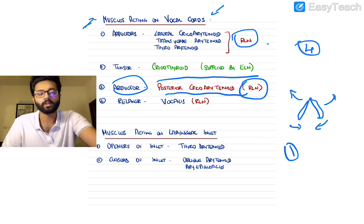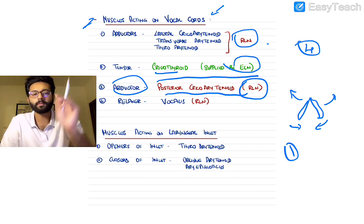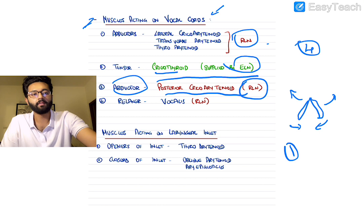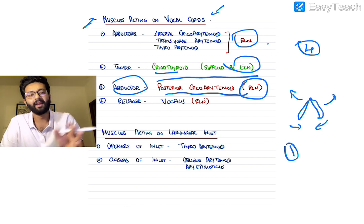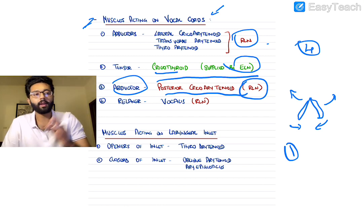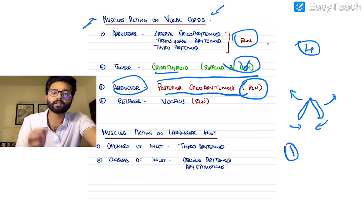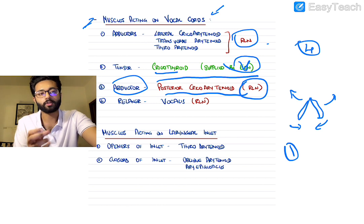Coming to the tensors and relaxers: the tensor is the cricothyroid, and this is the only intrinsic laryngeal muscle supplied by the external laryngeal nerve — all other muscles are supplied by the recurrent laryngeal nerve. The cricothyroid is a tensor of the vocal cord and makes the voice more shrill.